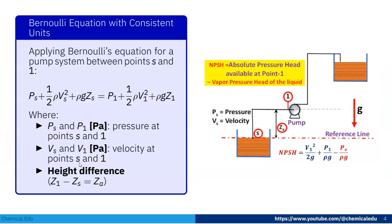Now, apply Bernoulli's equation between points S and 1. We can write: Ps plus half ρ Vs squared plus ρg Zs equals P1 plus half ρ V1 squared plus ρg Z1. Here, Ps and P1 are the pressures at points S and 1, Vs and V1 are the velocities in meters per second, and Z1 minus Zs is the height difference ZA.